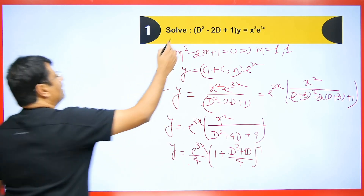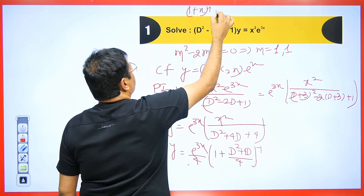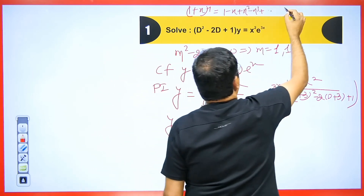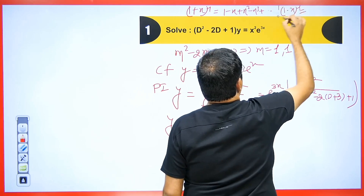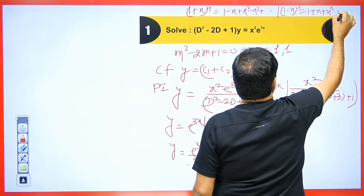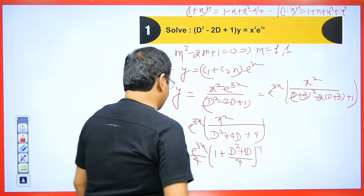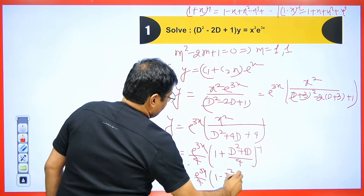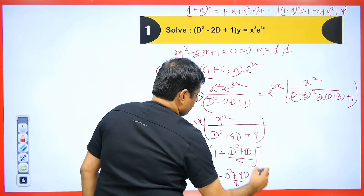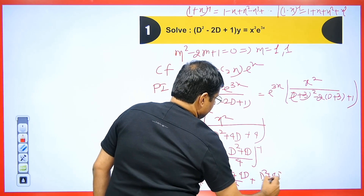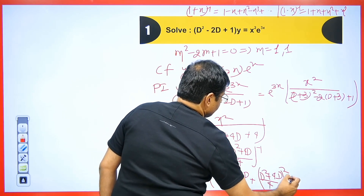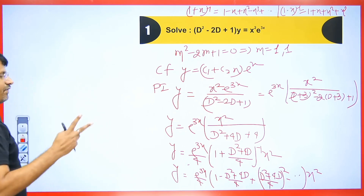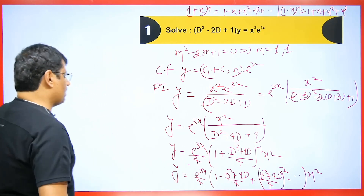Now we expand it using two formulas. The inverse of 1 plus x equals 1 minus x plus x squared minus x cube. The inverse of 1 minus x gives all positive terms. So y equals e to the power 3x upon 4 times 1 minus the quantity D squared plus 4D upon 4, plus the square of that quantity, times x squared. Since x squared can only be differentiated twice, terms up to D squared are important; the rest are not useful.